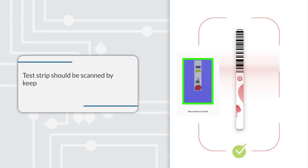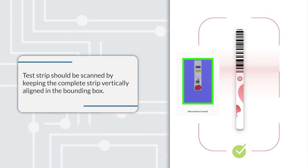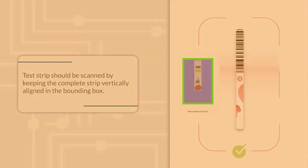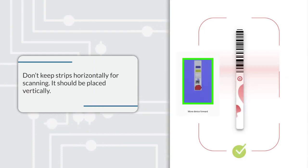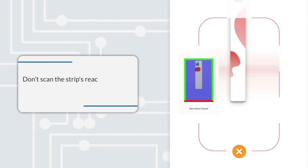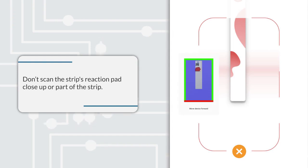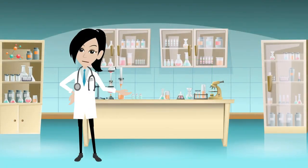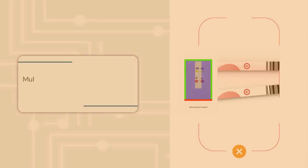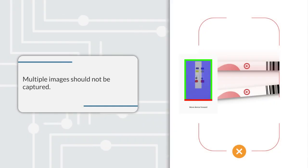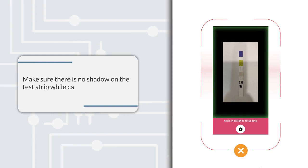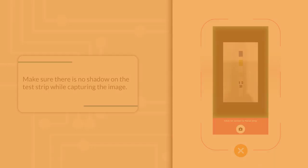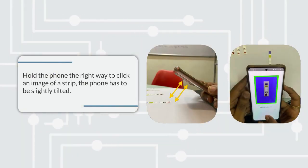The test strip should be scanned by keeping the complete strip vertically aligned in the bounding box. Don't keep strips horizontally for scanning — it should be placed vertically. Don't scan the strip's reaction pad close up or part of the strip; the complete strip should be scanned. Multiple images should not be captured. Don't submit a scan if the image is blurred. Make sure there is no shadow on the test strip while capturing the image.